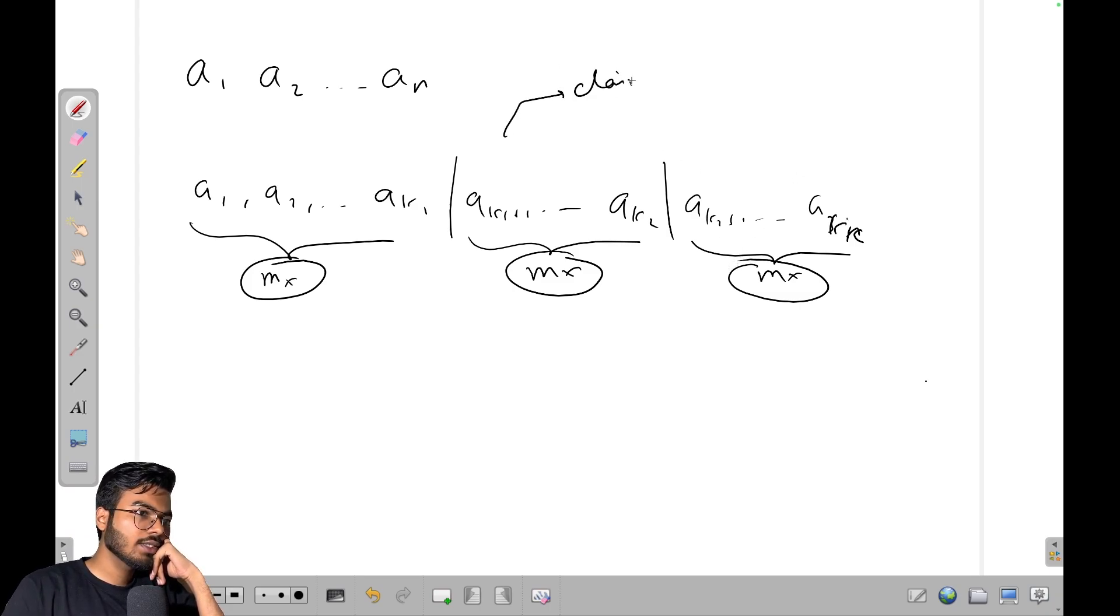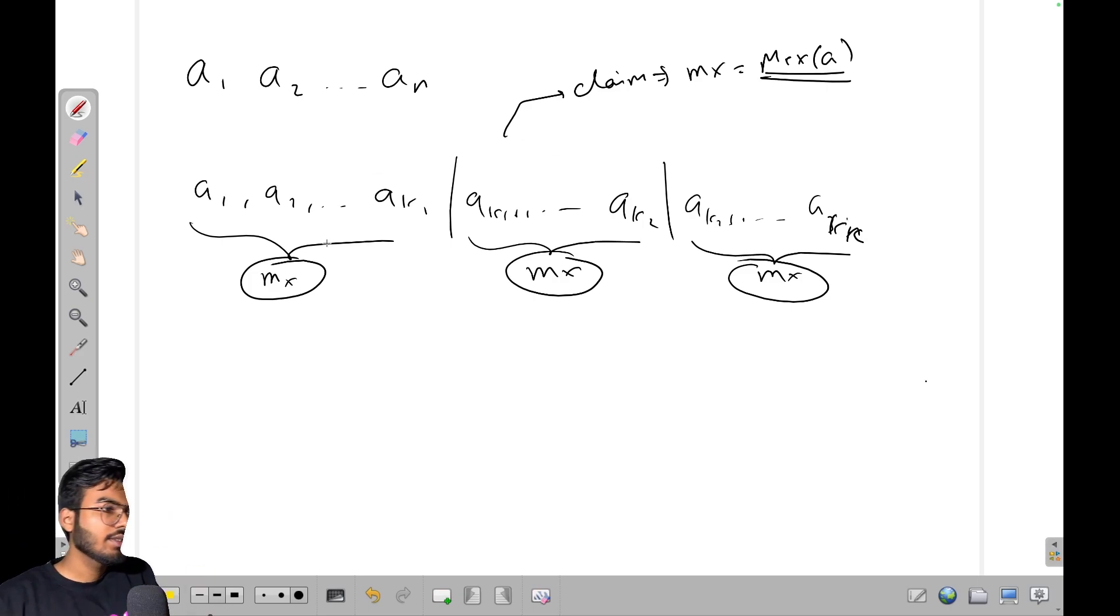There is a claim: this mx value equals to MEX of the entire array. How? Because MEX is the smallest non-negative integer that is not present in this array. Here also, MEX is the smallest non-negative integer, and here also. So if you consider overall, then the smallest non-negative integer that is not present in the entire array is mx.